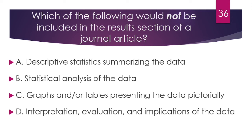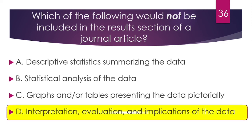Question number 36. Which of the following would not be included in the results section of a journal article? The correct answer is D. The results section contains the data and statistical findings, while interpretations and implications belong in the discussion section, not the results section.